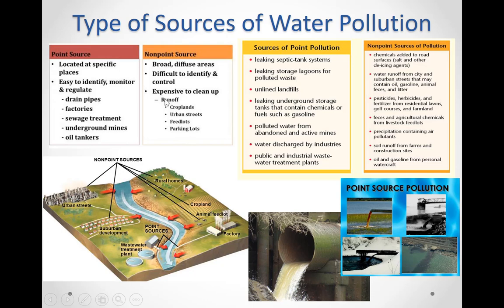Non-point sources, on the other hand, are broad diffuse areas that are more difficult to identify and control, such as runoff from an urban street, agricultural runoff, or pesticide being driven by the wind. These are all non-point sources of water pollution — for example, pesticide that goes into the wind and then rain catches it and falls with the rain.